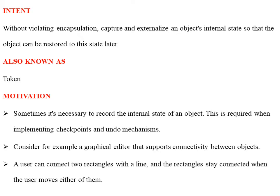Consider the example of a graphical editor that supports connectivity between objects. If we take two rectangles connected with a line, whenever that object moves, the rectangle also moves based on the connectivity. Whenever the line moves, if you perform the undo mechanism, it will restore the normal state. This is demonstrated in the motivation diagram.